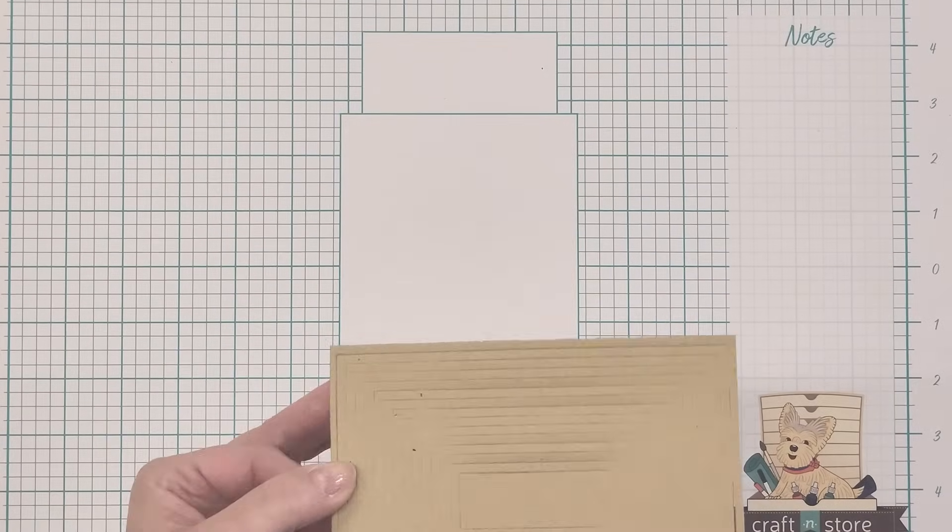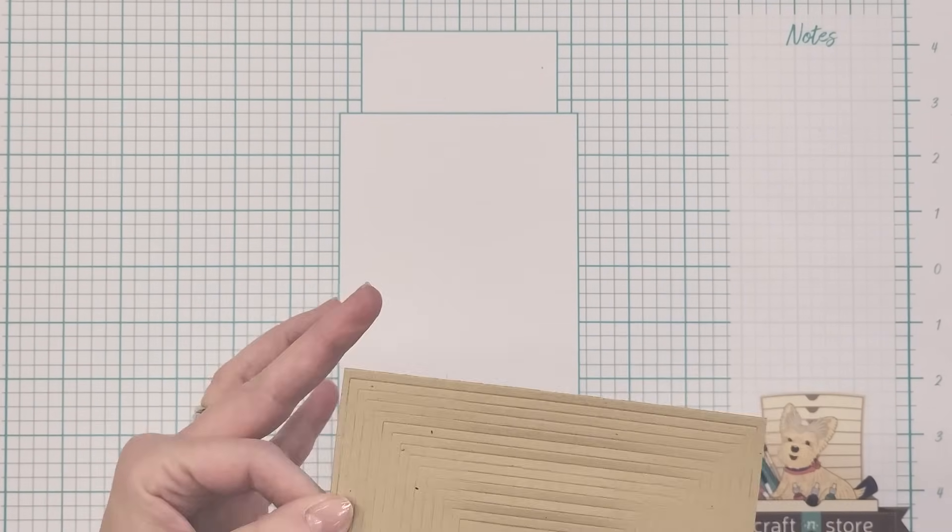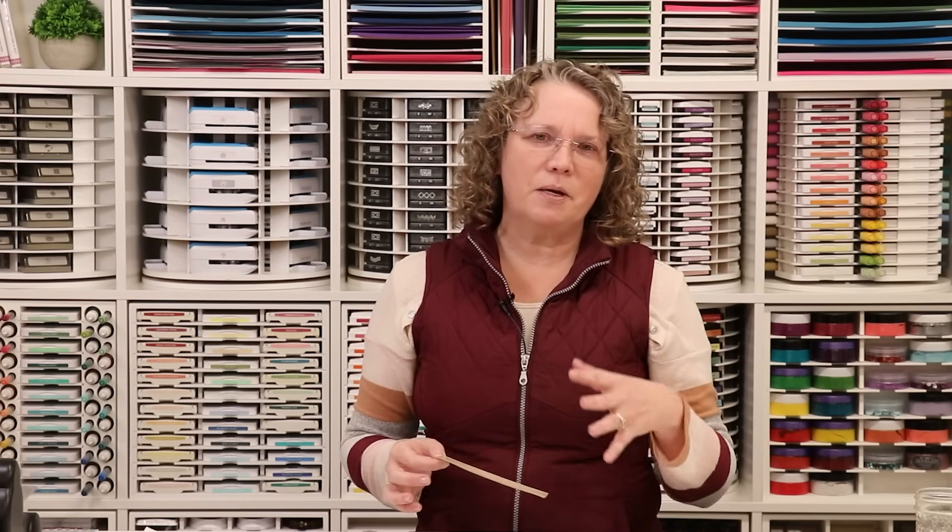Tip number one: detailed dies. If you've ever had detailed dies that you run through and they don't cut all the way out, it can be incredibly frustrating. This is one of my favorite dies. It cuts all these little frames and every time I try it, it does not cut all the way through when I just run it through my big shot as is. But I found a tip thanks to our wonderful friends at Pinkfresh. They have shown some great tips and ways to get these dies to cut all the way through.